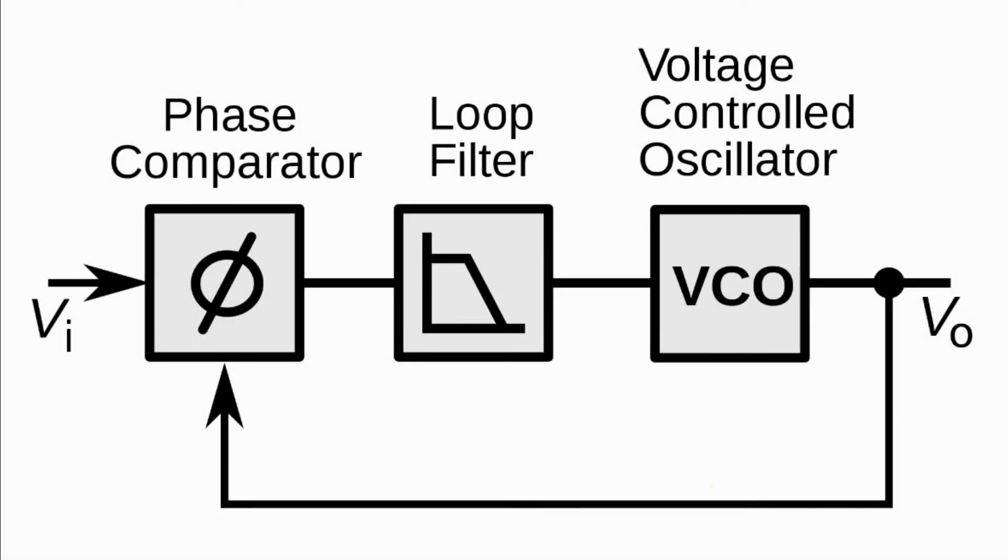A phase locked loop PLL is a control system that generates an output signal whose phase is related to the phase of the input signal. In other words, the output frequency tracks the input frequency. One important application of PLL is frequency synthesis, where it can generate a frequency that is a multiple of the input frequency.